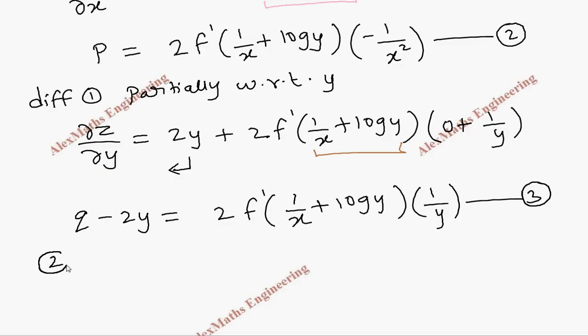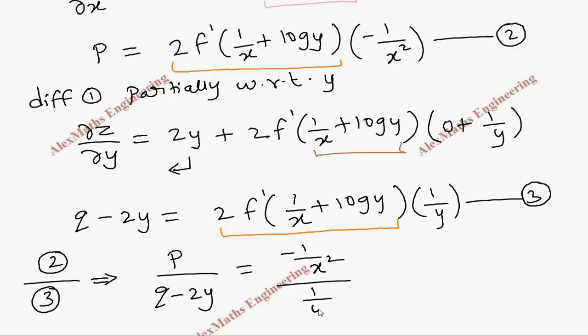Now we are going to divide second expression by third expression. So the numerator is p and denominator is q - 2y. When we divide, this entire term gets cancelled. So we are going to write only the remaining terms, which is (-1/x²) / (1/y).